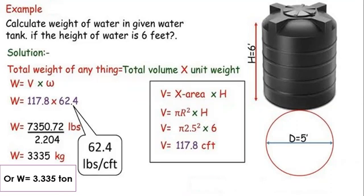So our final step was to multiply these two quantities. So 117.8 multiplied by 62.4, we get answer 7350.72 pounds. So in order to calculate this value from pounds to kg, we need to divide this value with 2.204.